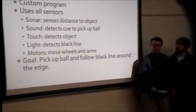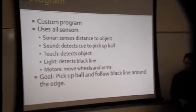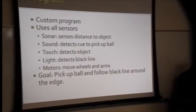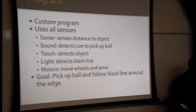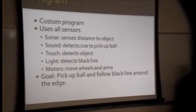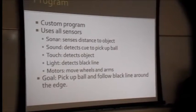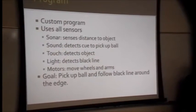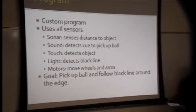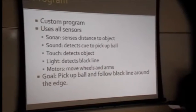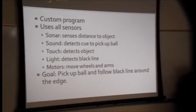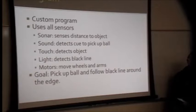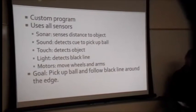So for our program, we wrote our own custom program. It uses all the sensors. The sonar sensor senses the distance to the ball and determines length and range so it can start the sequence. The sound sensor listens to our cue to pick up the ball and run the rest of its sequence. The touch sensor determines when the robot reaches the ball. The light sensor detects the black line for the final part of the program. And we obviously use the motors to operate the wheels and the arms.